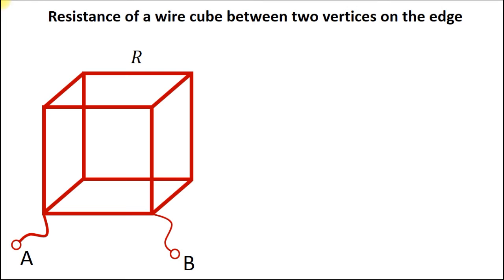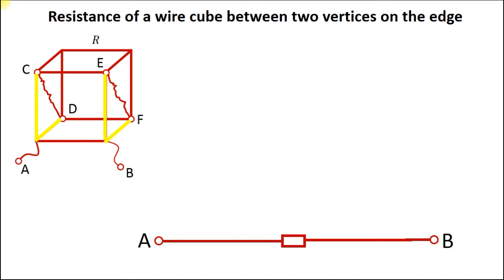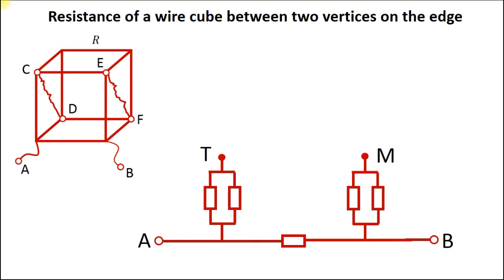Finally, let's find the cube resistance between two vertices on the common edge. Due to the cube symmetry, the current through edges AC and AD is the same, so points C and D have the same potential. This is also true for the symmetrical points E and F. So we can merge each of those pairs of points into one junction, and we can easily draw the equivalent circuit. This edge starting at point A ends directly at point B. These two pairs of edges can be replaced by constructions of two resistors in parallel. We merged points C and D into one junction T and points E and F into one junction M.